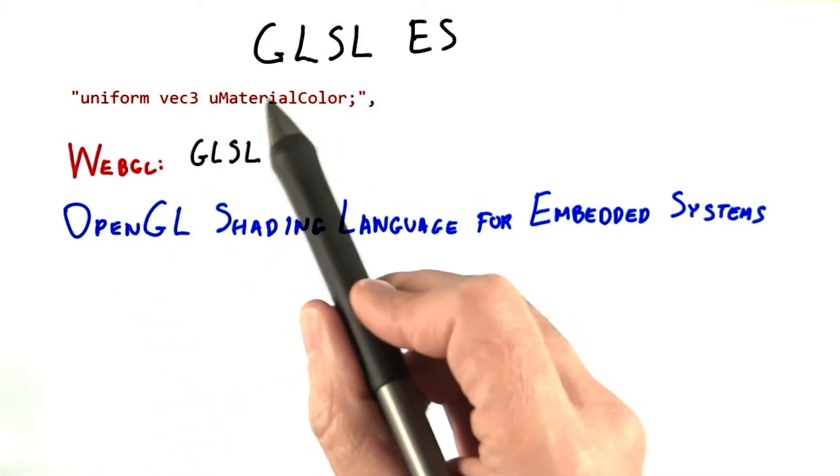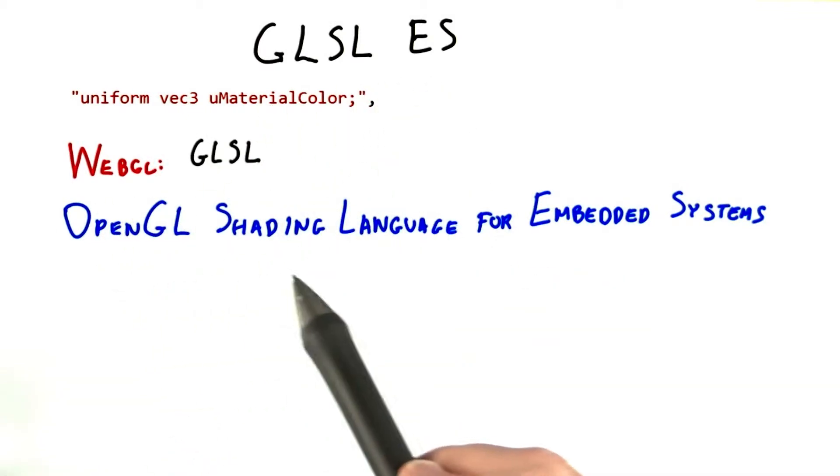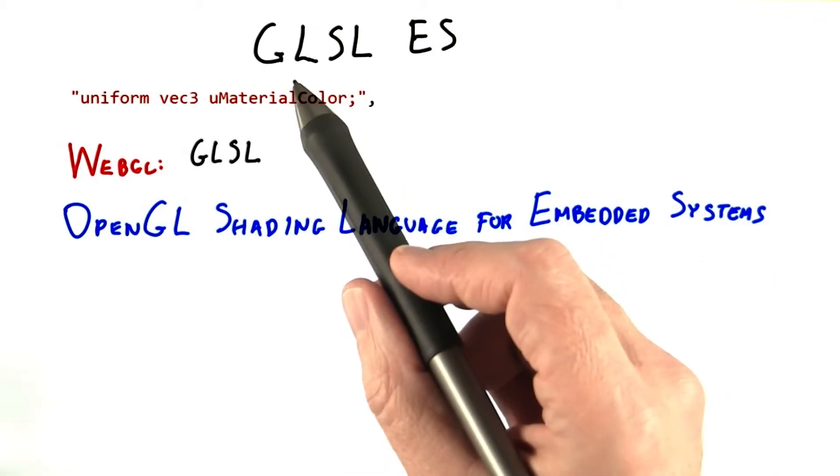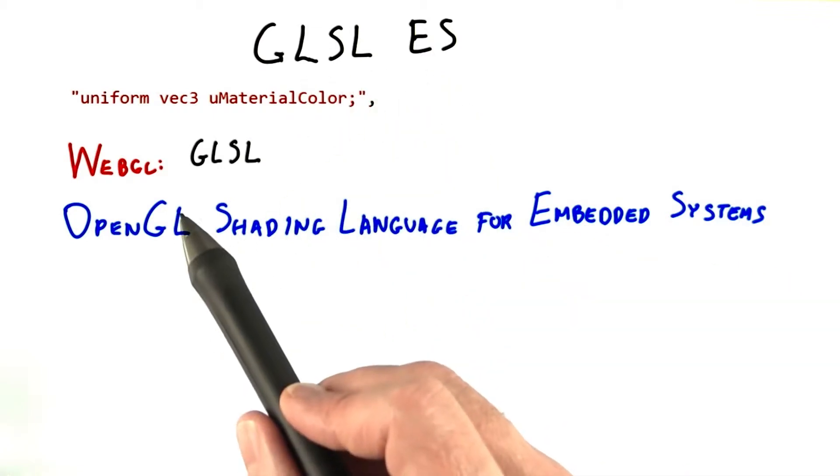WebGL shaders are written in GLSL ES, the OpenGL shading language for embedded systems. No one calls it GLSL ES. Everyone simply says GLSL.